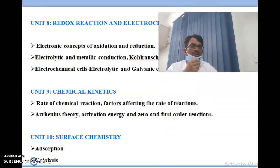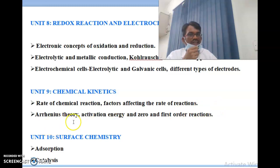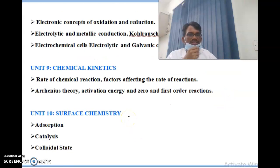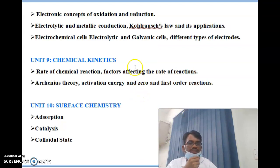Unit 9 is chemical kinetics, covering rate of chemical reaction, factors affecting the rate of reaction, Arrhenius theory, activation energy, and zero and first order reactions. Unit 10 is surface chemistry, covering adsorption, catalysis, and colloidal states.